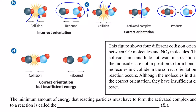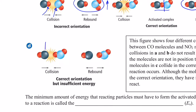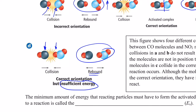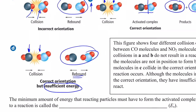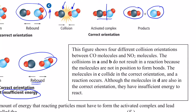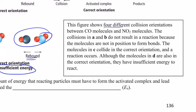In scenario D, the carbon atom in carbon monoxide is colliding with an oxygen atom in nitrogen dioxide, but they rebound from each other. That is because there is insufficient energy to form the activated complex. So two things need to happen: the molecules must be oriented properly and they must have sufficient kinetic energy for the activated complex to form.